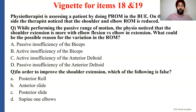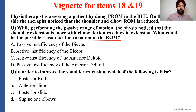Let's read the question together. A physiotherapist is assessing a patient by doing passive range of motion in the bilateral upper extremity. On the right side, the therapist noticed that the shoulder and elbow range of motion is reduced. While performing the passive range of movement, the physio noticed that the shoulder extension is more with elbow flexion versus elbow in extension. What could be the possible reason for the variation in range of motion? Options: A — passive insufficiency of the biceps; B — active insufficiency of the biceps; C — active insufficiency of the anterior deltoid; D — passive insufficiency of the anterior deltoid. The anterior deltoid cannot be considered here because the deltoid is a one-joint muscle, only acting at the shoulder joint. So options C and D are not right answers.